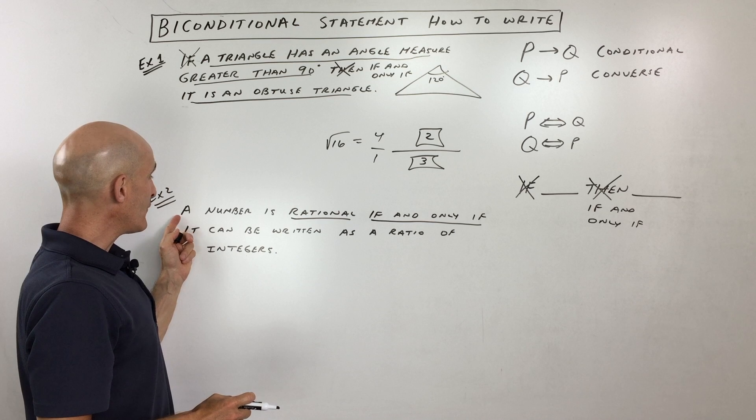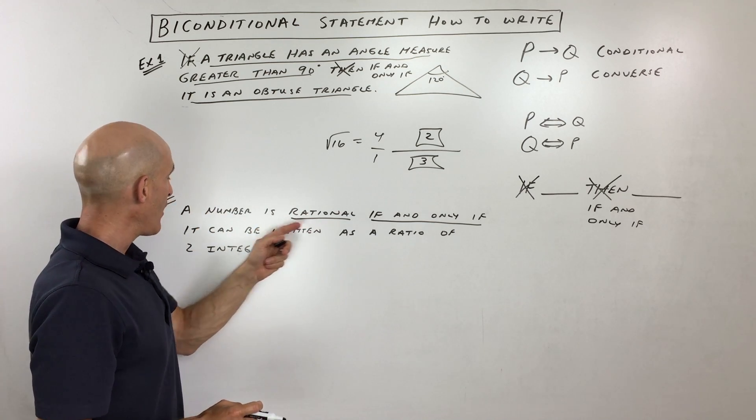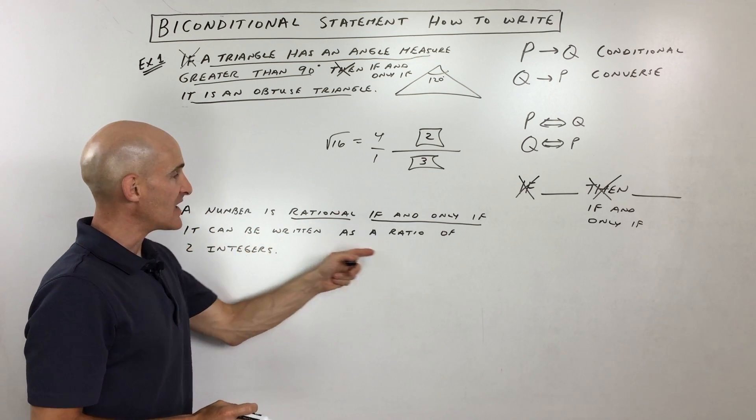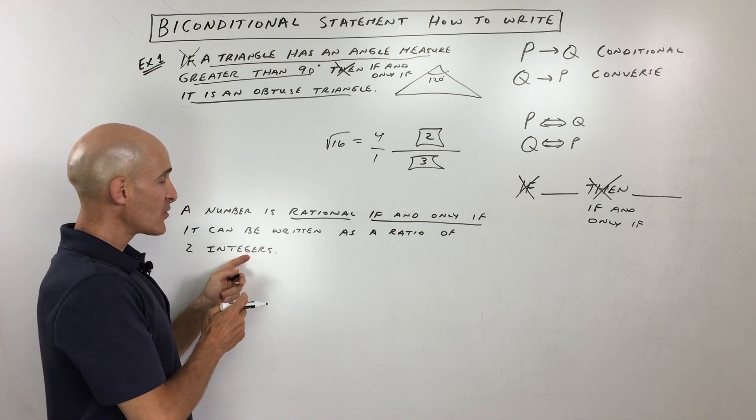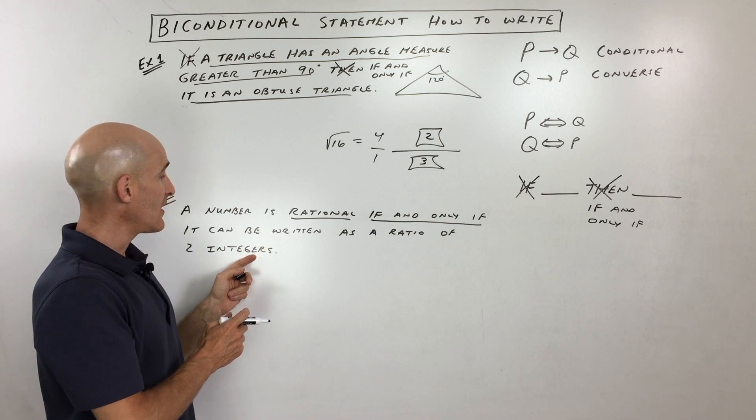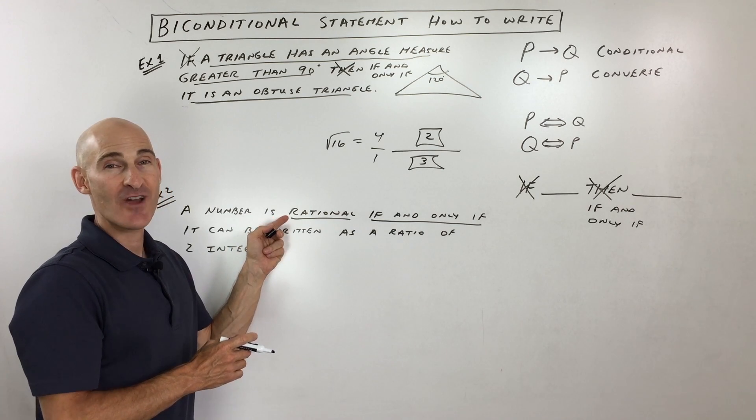How about first? If a number is rational, then it can be written as a ratio of two integers. Let's do the converse now. If a number can be written as the ratio of two integers, then it is a rational number.